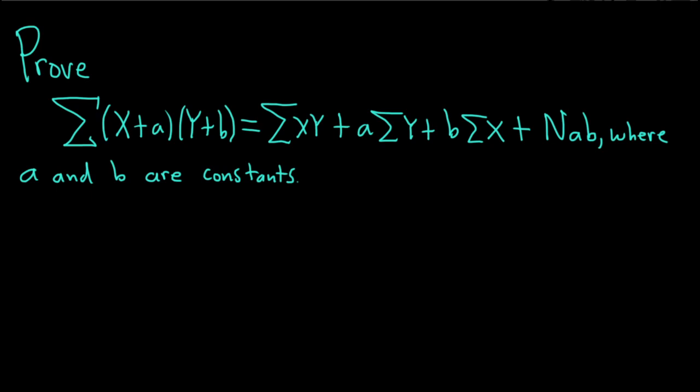In this problem, we're going to prove this equation where a and b are constants. There is some implied notation in all of this. If we know that a and b are constants and we have this capital N here,